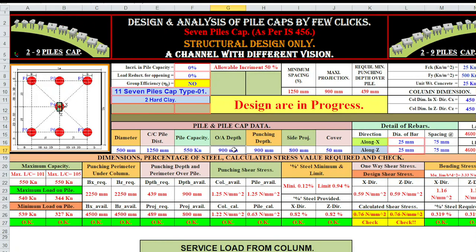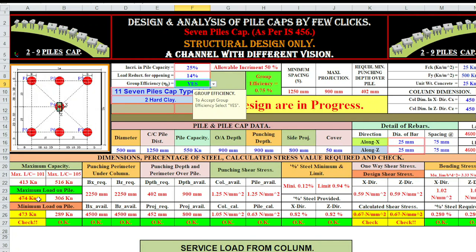Now we have to increase the overall depth. Before increasing the overall depth, I am considering the increment. Allowable increment is 50%. So we are taking 25% load reduction for live load and for load reduction for opening and live load. Say it is 14% and group efficiency. Group efficiency 75%. Now maximum capacity is 413, maximum load on pile 474. So we have to check this.